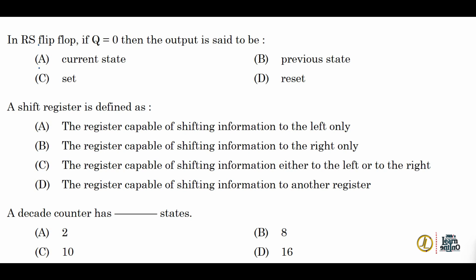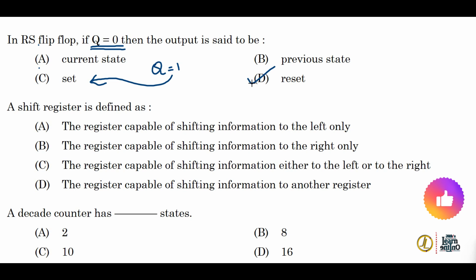Next: in an RS flip-flop, if Q = 0, then the output is in the reset state. In flip-flops, if the Q output is 0 it is called the reset output; if Q is 1 it is called the set output. So the correct option is option D. Next: a shift register is defined as a register capable of shifting information either to the left or to the right. Option C is correct.